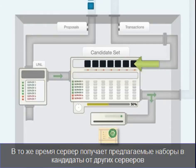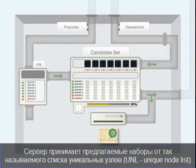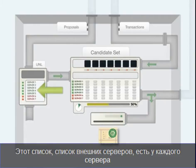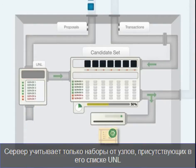At the same time, the server receives proposals from other servers on the network. A proposal is a set of transactions to consider applying to the ledger. The server routes incoming proposals based on something called the unique node list, or UNL. Each server has a UNL — a list of external servers. Proposals from servers not on the UNL are ignored; the server only pays attention to incoming proposals from servers on its UNL.